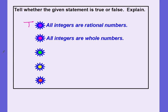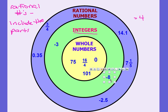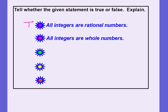Second: 'All integers are whole numbers.' Are all integers whole numbers? No — negative 3 is not a whole number because it is negative. Negative 8 is not a whole number because it is negative. So not all integers are whole numbers — this one is false.